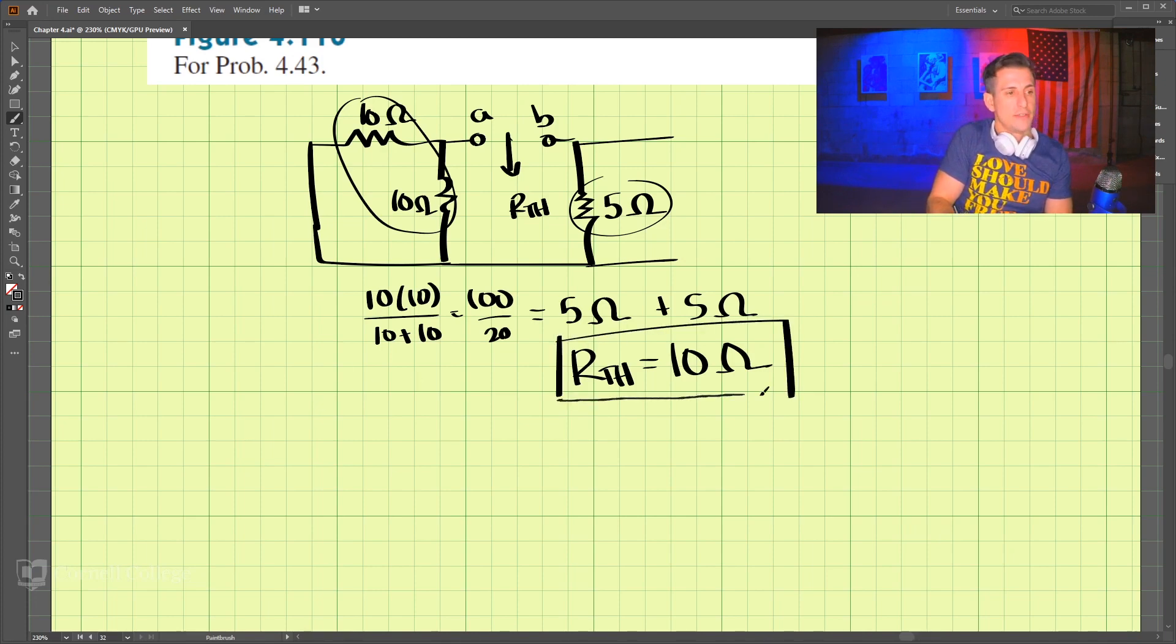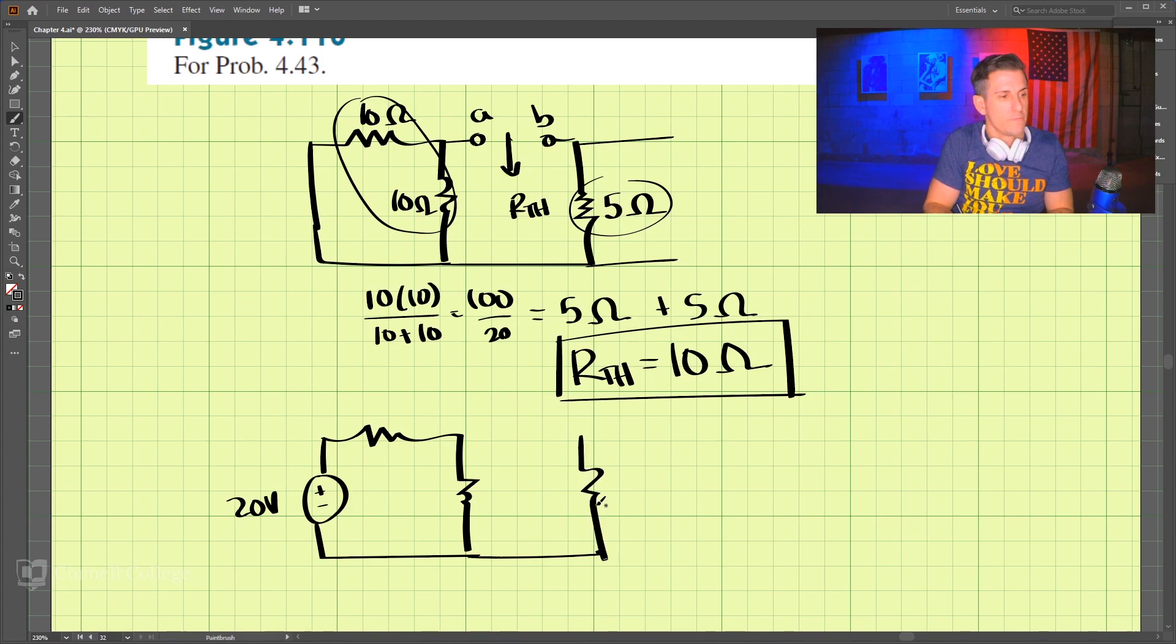Now let's find the Thevenin voltage. So we turn back on the voltage sources. Let's draw the circuit. We have 20 volts, and 10, 10. And there's a resistor there. And then we have our 2 amps here. And this resistance is 5 ohms.